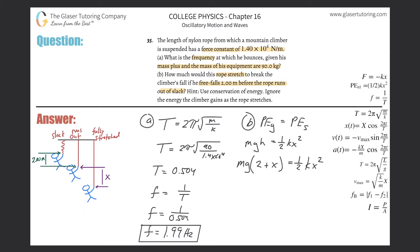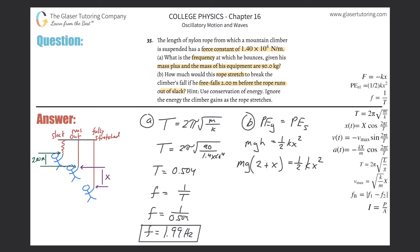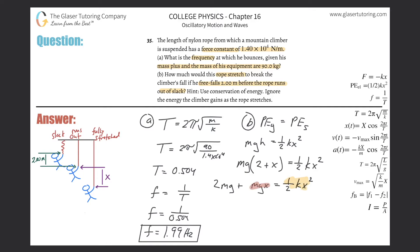This is going to work out to be a quadratic. The signs will cancel each other out. Distributing the mg, we get: 2mg plus mgx equals one half kx squared. Notice we have a squared term, a first-power term in x, and a constant term.